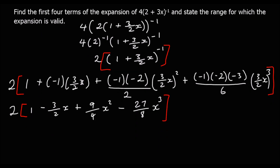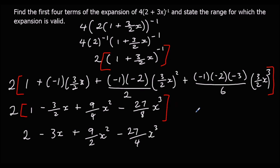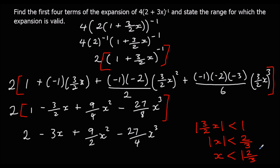We need to multiply through by 2 to finish: 2 − 3x + (9/2)x² − (27/4)x³. For the range of validity: it's valid when |x term| < 1, so |(3/2)x| < 1. Multiplying by 2 and dividing by 3 gives |x| < 2/3, or x < |2/3|. So the expansion is valid between x = −2/3 and x = 2/3.